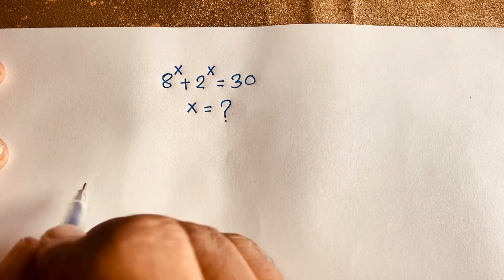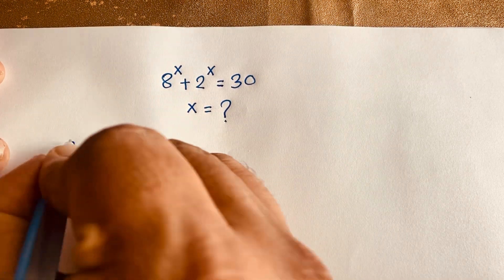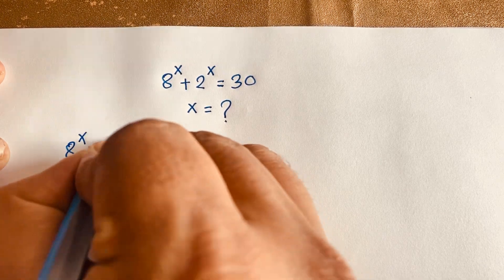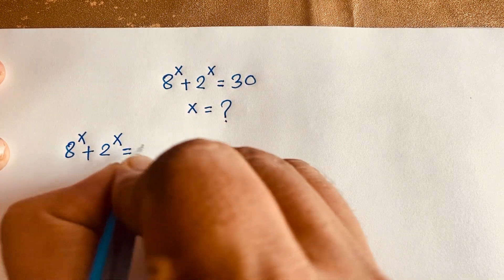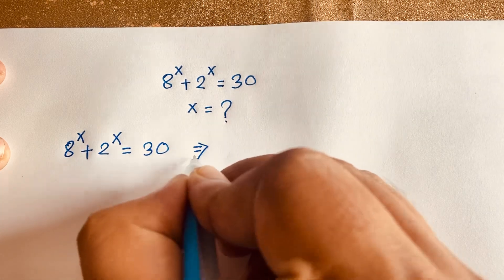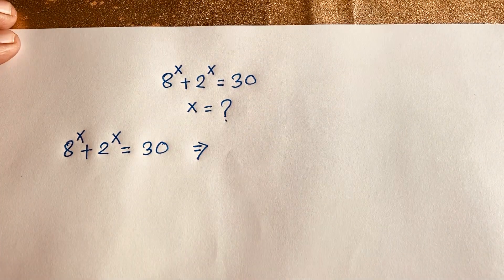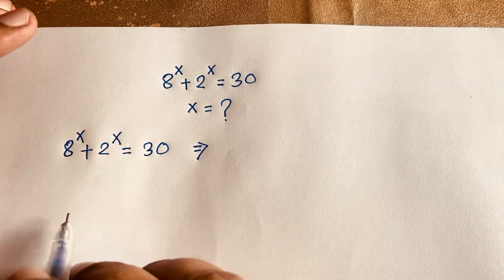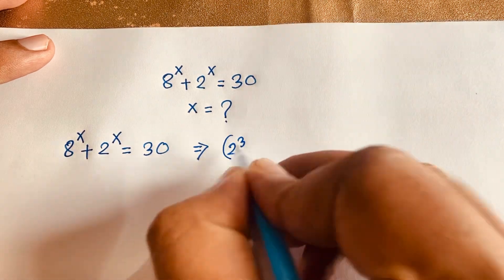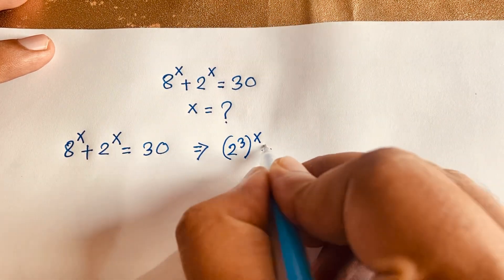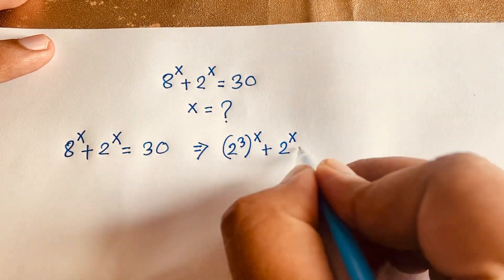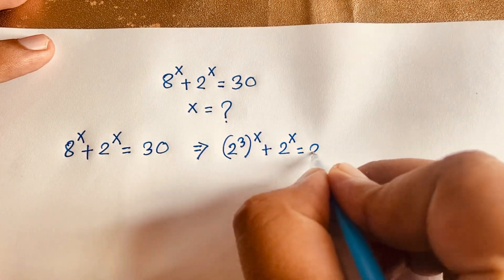Our question is: 8 to the power x plus 2 to the power x is equal to 30. If I evaluate this equation, here is 8 — it will be 2 to the power 3 — and whole to the power x, plus 2 to the power x is equal to 30.